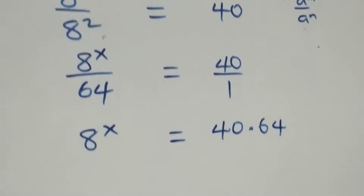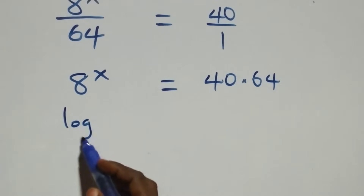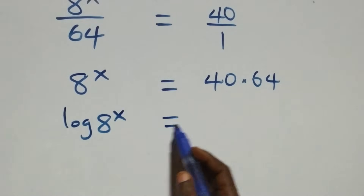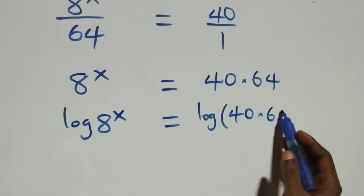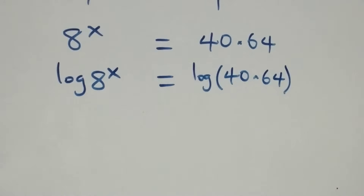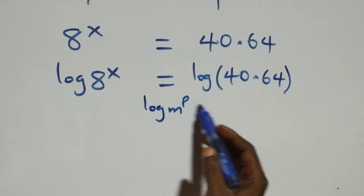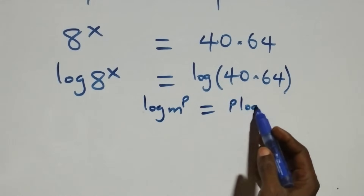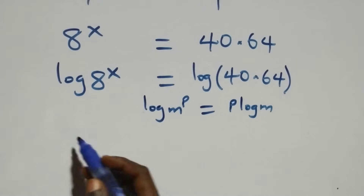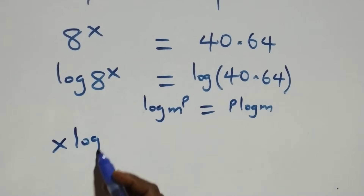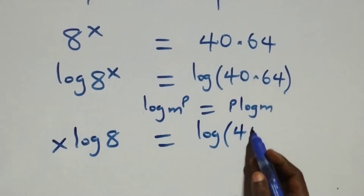Next we take the log on both sides: log of 8 raised to power x equals log of 40 times 64. We apply the power rule of logarithms — log m raised to power p equals p log m — so this becomes x log 8 equals log of 40 times 64.